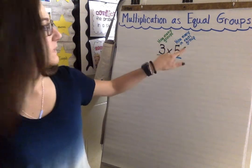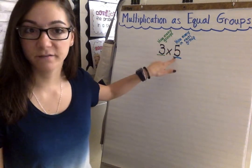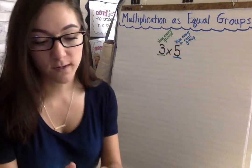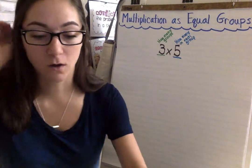Is three, how many to put in each group is five, and then our product is going to give us how many we have in all.